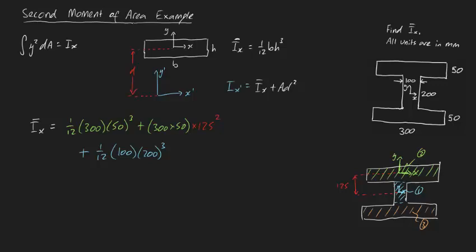Okay, so that's the blue bar done. What about this orange bar? It won't be too hard. We just add this entire thing to 1 12th base times height cubed. In this case, our base is 300 millimeters, and our height is 50 millimeters.